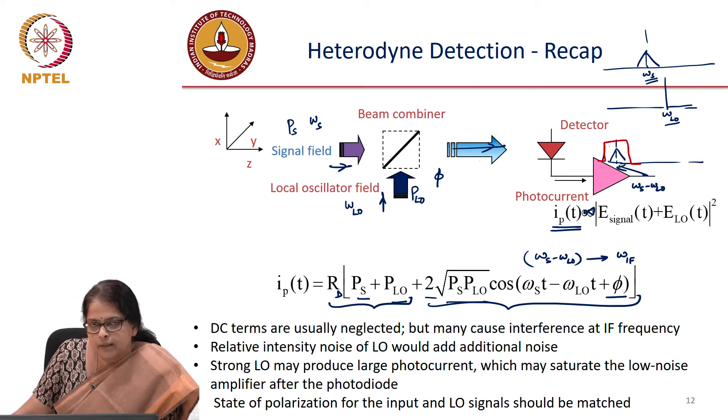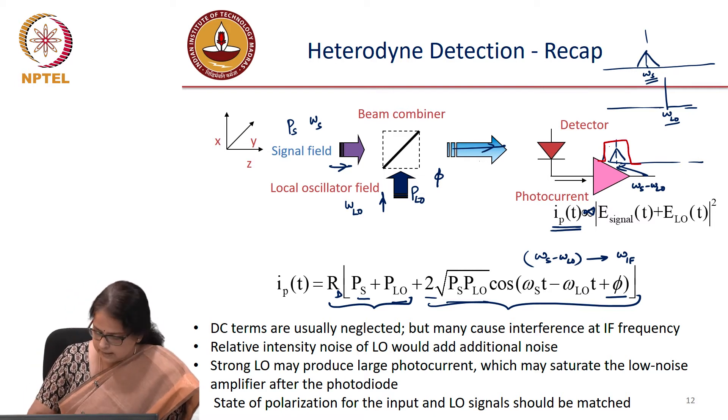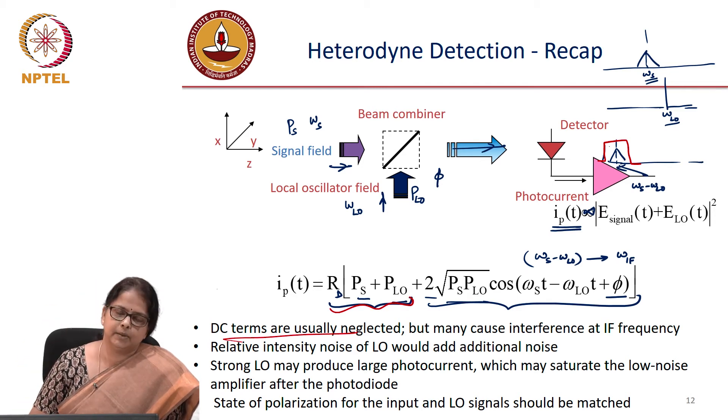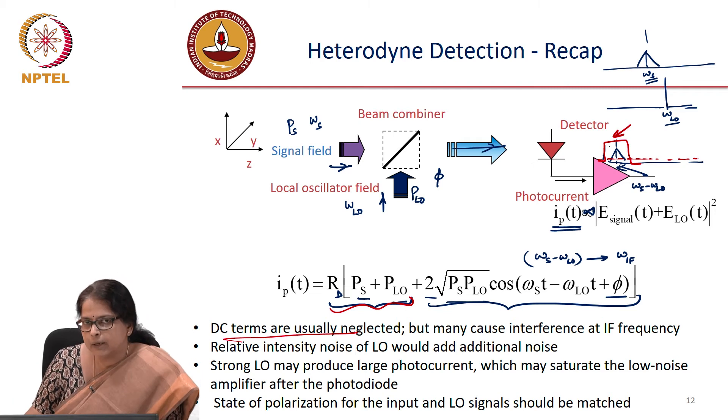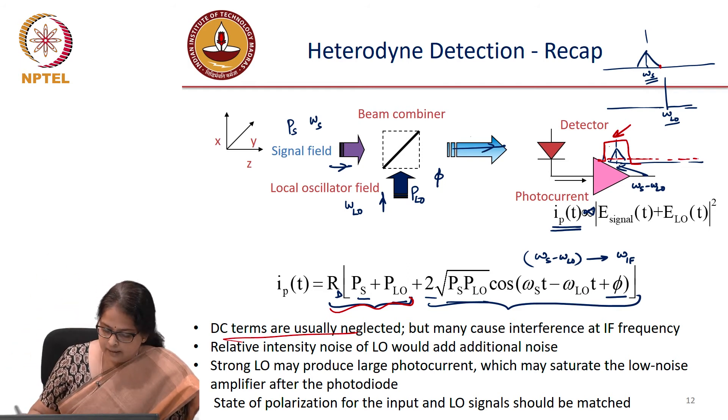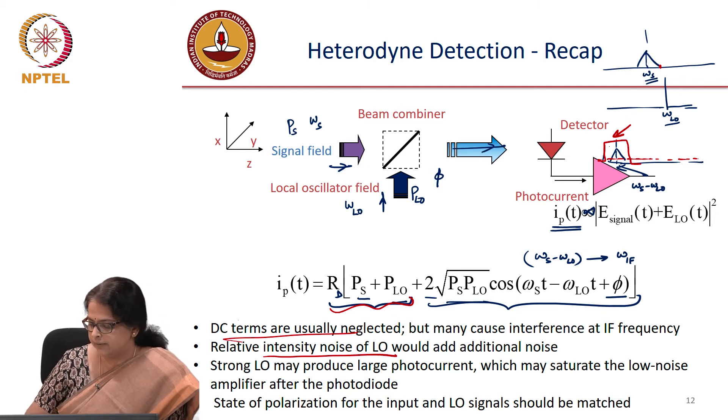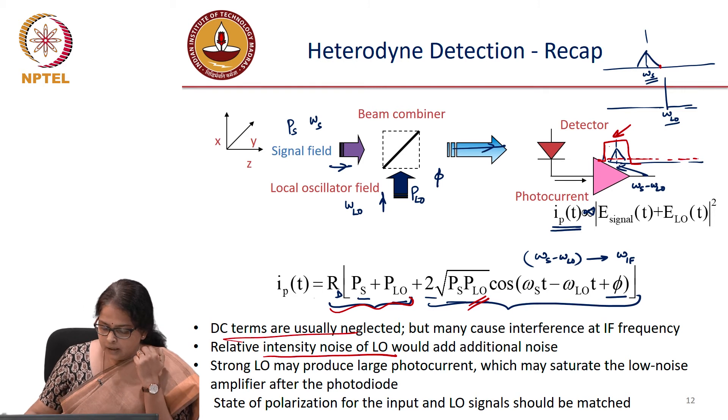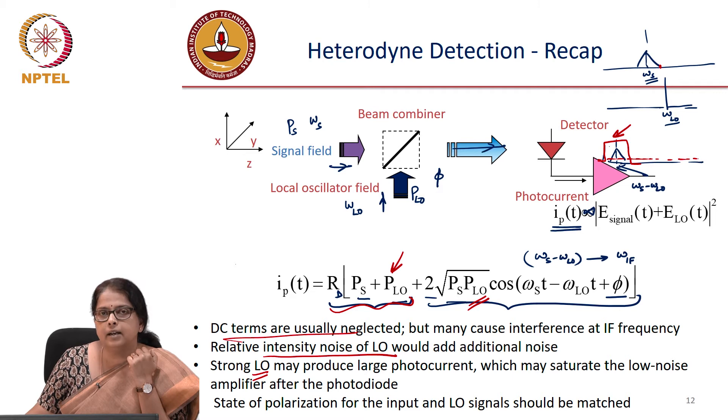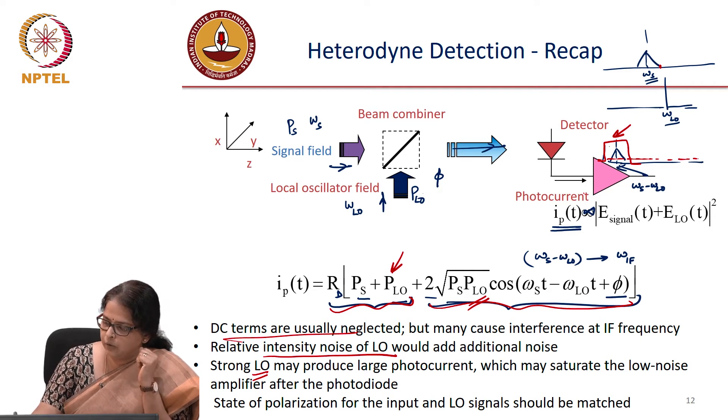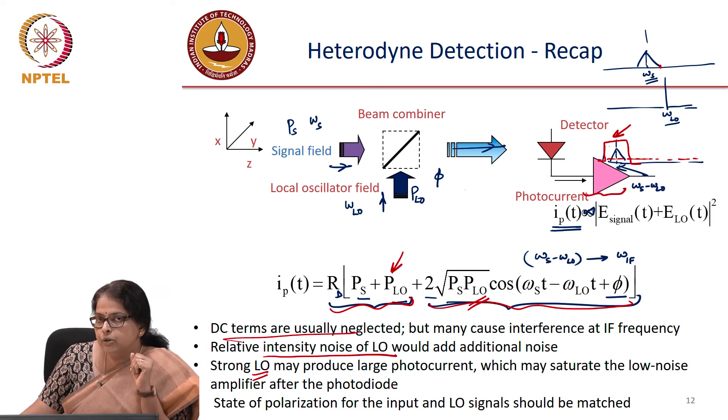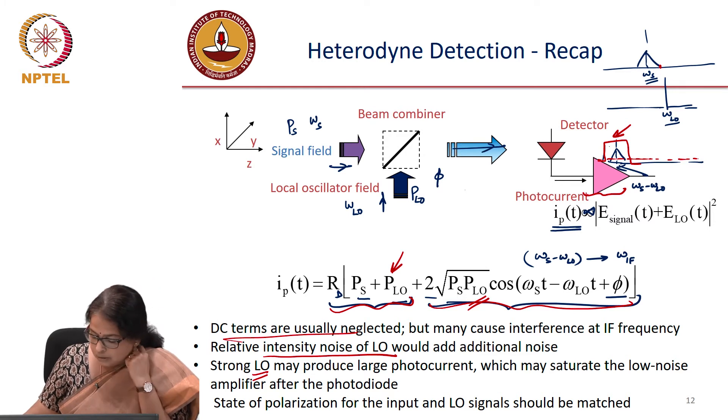But what is the problem with this approach? There are couple of problems. First problem is that even though the DC terms are neglected, there is noise in this DC terms. The noise in this receiver actually increases because of this DC. And there could be some interference which will fall on this IF frequency. The intensity noise of the LO will have additional phase noise because this LO has intensity noise. If the LO current is large, what will happen is current due to this R_d P_LO part is much larger than this beat component. So that may saturate low noise amplifier. If you have a low noise amplifier after the detector, that may saturate the detector. So you need to take care always to filter the IF part before you take it through a low noise amplifier.